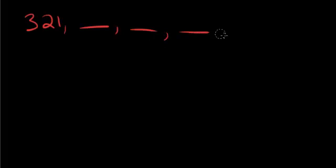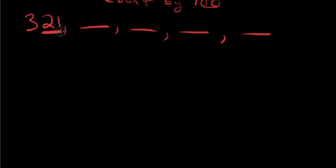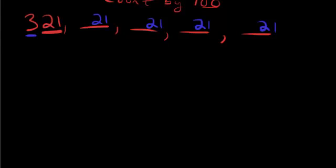Here's another example. Let's start at 321, and the question is to count by 100. Since 100 has two zeros, we hold on to two numbers — the 21 stays the same throughout. The only thing that changes is the number in front: it goes from 3 to 4 to 5 to 6 to 7. So counting by 100 from 321, we reach 721 by the end.